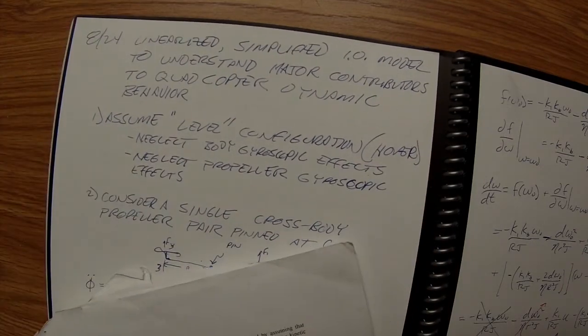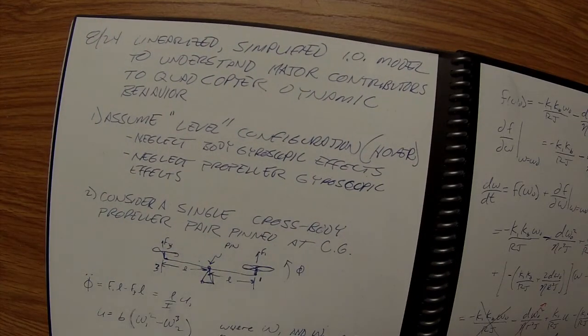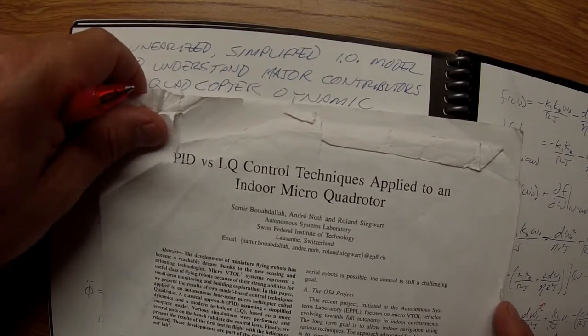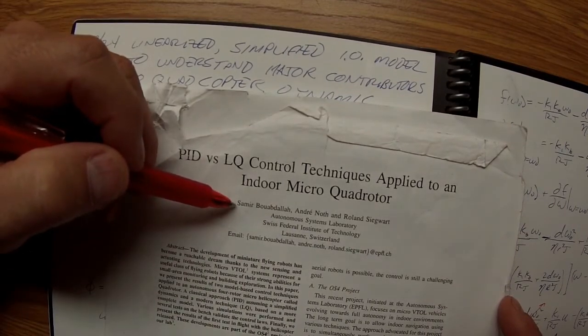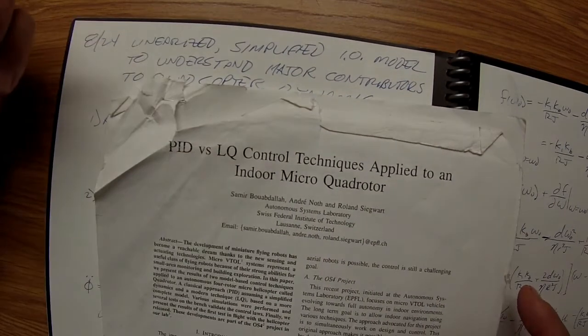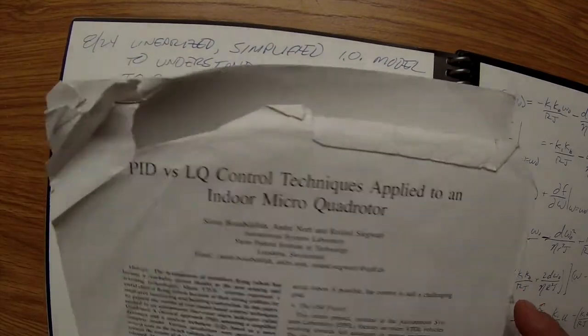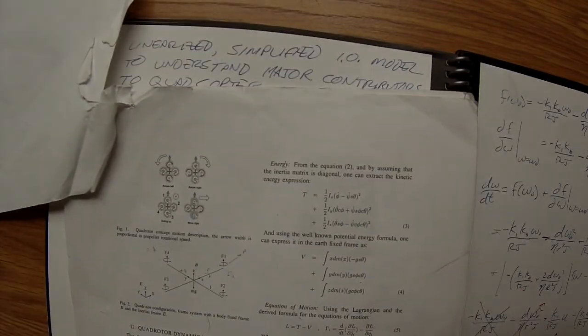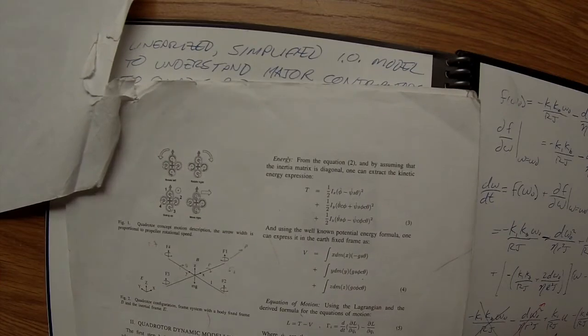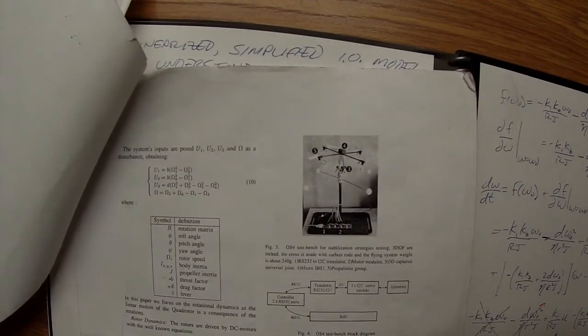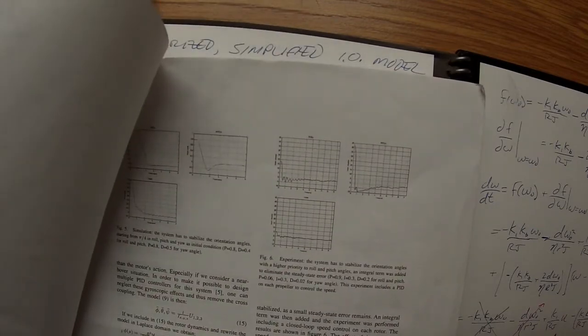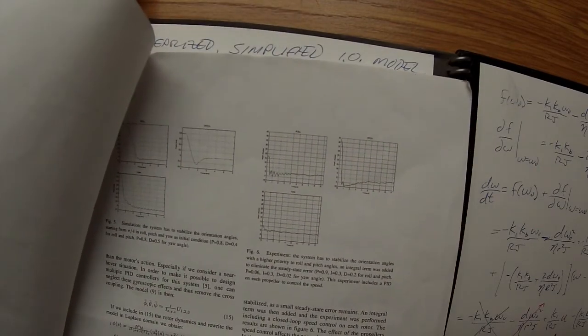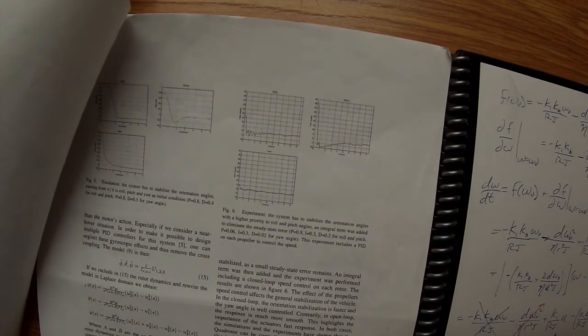Following the lead of our primary reference paper, which I continue to refer to and you'll see it in the blog, referred to as the Bouabdallah paper, we derived similar equations and now we're to how we're going to control it. Now ultimately I'm interested in a number of control system problems associated with this platform.